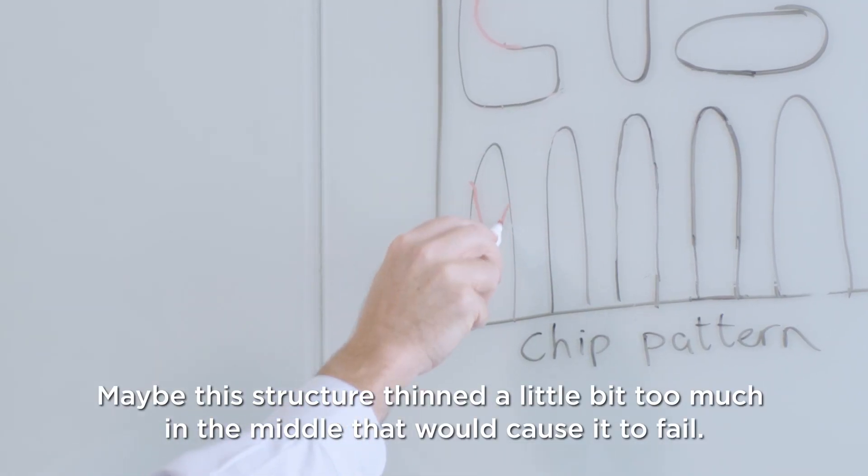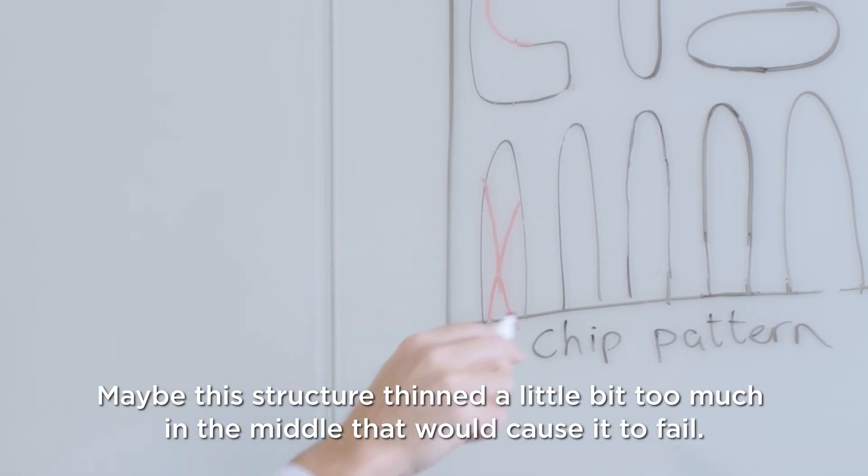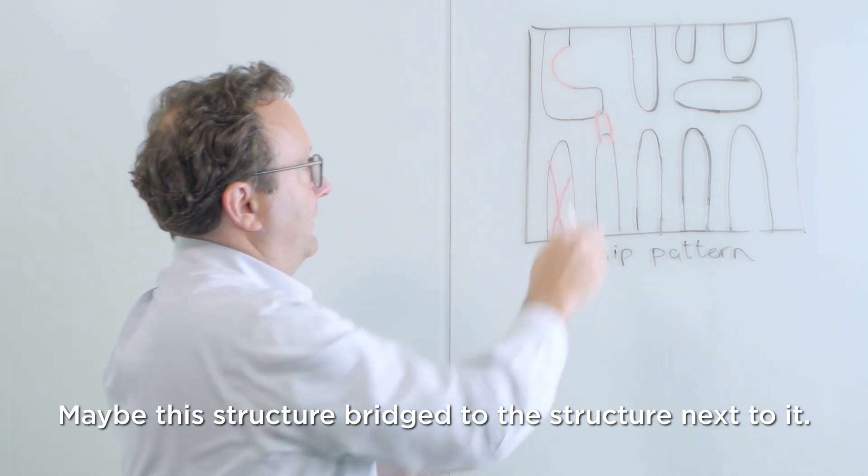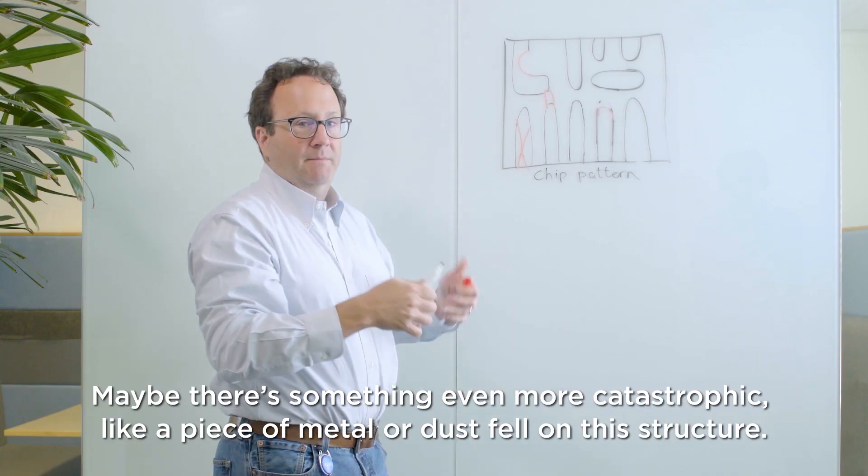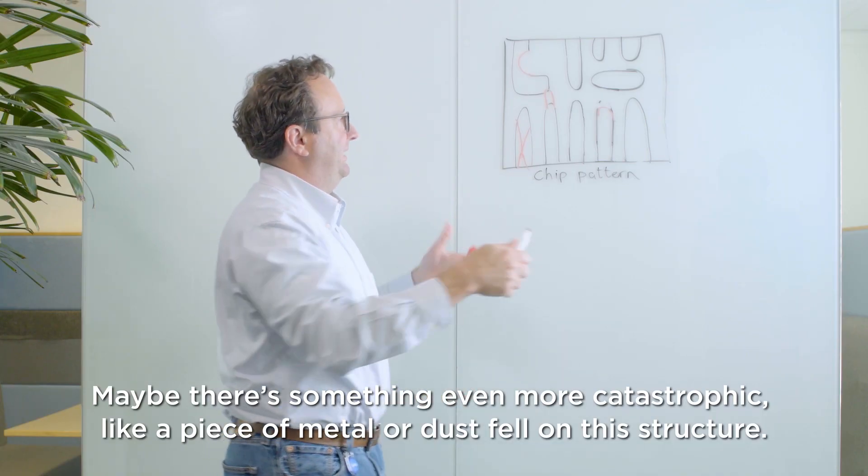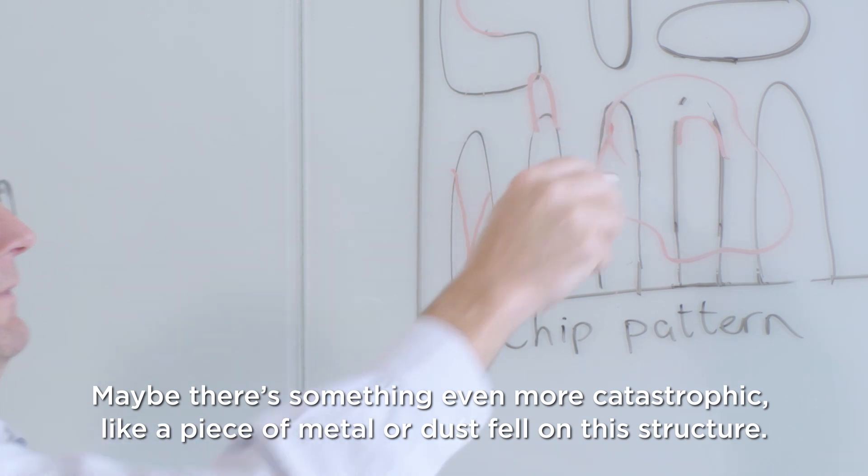Maybe this structure thinned a little bit too much in the middle that would cause it to fail. Maybe this structure bridged to the structure next to it. Maybe this structure pulled back. Now maybe there's even something more catastrophic like a piece of metal or a piece of dust fell on this structure.